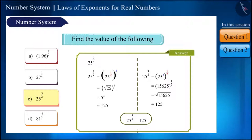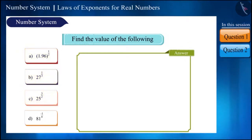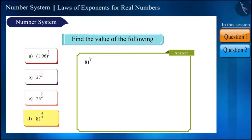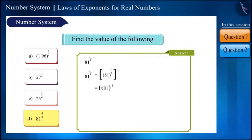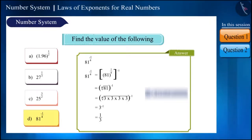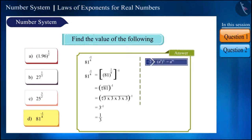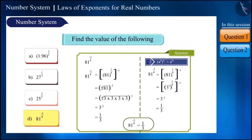So far the numbers were positive, but here the exponent of 81 is minus 1/4. We can write it as 81 raised to the power 1/4 — that is, the fourth root of 81 — giving us 3 to the power of minus 1. We can also simplify it using the exponent rule and get the same answer: 1/3.